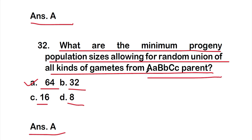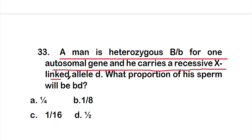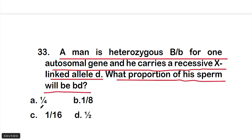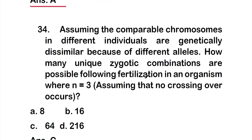Question 33: A man is heterozygous (Bb) for one autosomal gene and carries a recessive X-linked allele (d). What proportion of his sperm will be small b small d? Options are 1/4, 1/8, 1/16, or 1/2. The right answer is option A — 1/4.